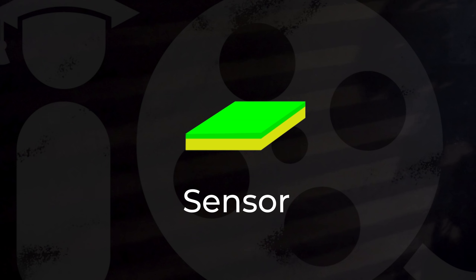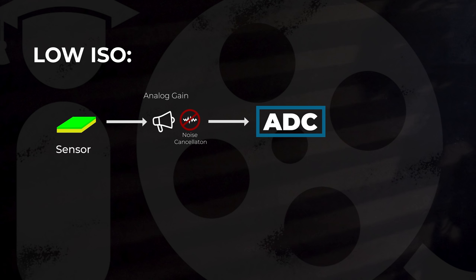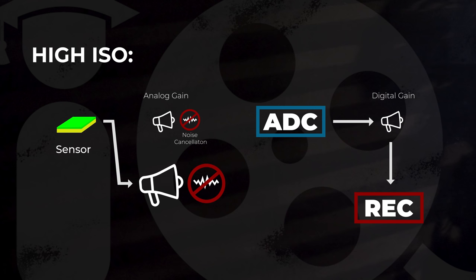We start out with the same photosensitive silicon slab which does not change quantum sensitivity. When a lower ISO is engaged, the signal is sent through a basic amplifier which applies an analog gain to the signal before it is sent to the analog-to-digital converter to convert to digital. Then a digital gain is applied and the signal is recorded onto a codec. When a high ISO is engaged, the signal coming off the sensor instead takes another path through a more powerful, higher-gain amplifier with additional noise cancellation circuits before going to the ADC, where again more digital gain is applied and the signal is recorded to media.